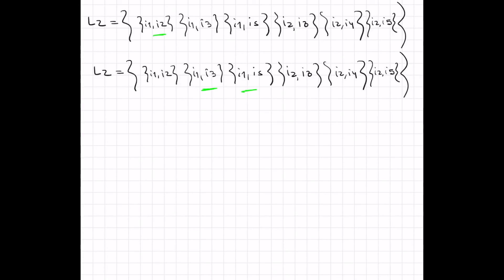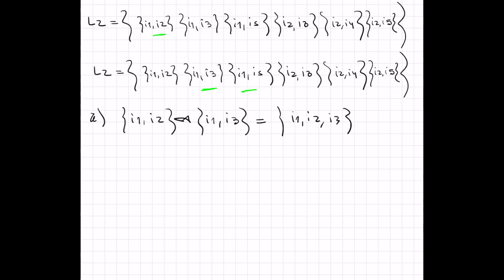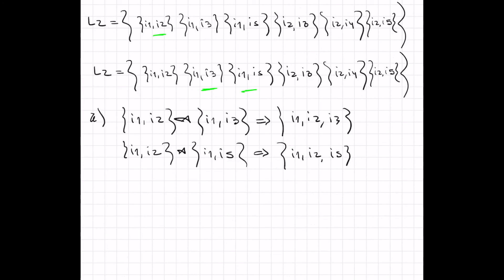Joining {I1,I2} with {I1,I3} produces {I1, I2, I3}. Joining {I1,I2} with {I1,I5} produces {I1, I2, I5}. So we already have two item sets of size three that will be part of C3.